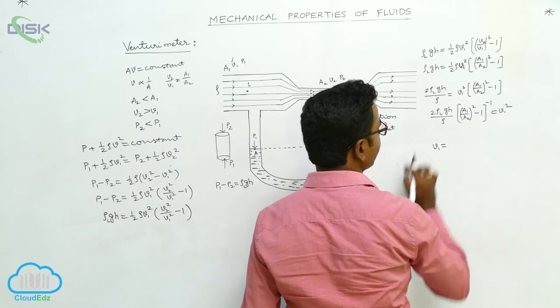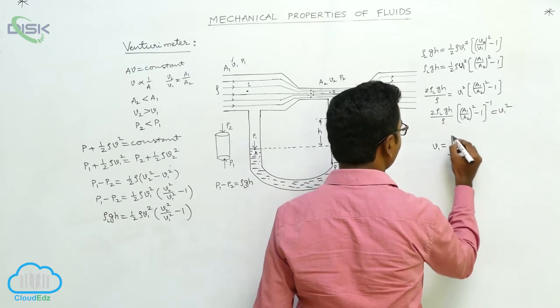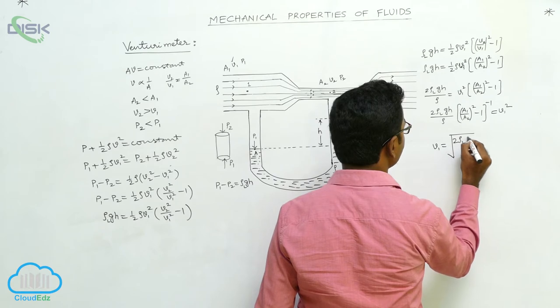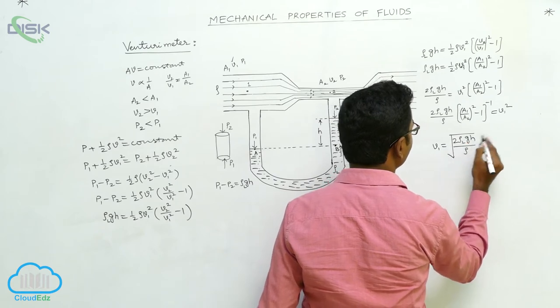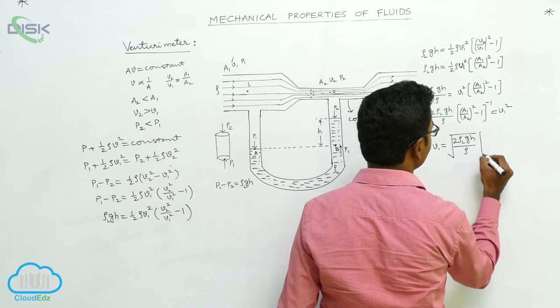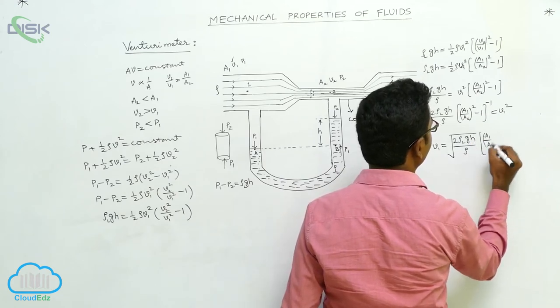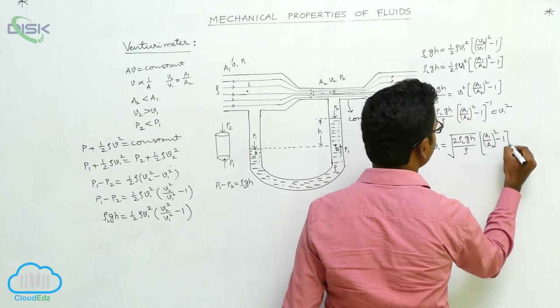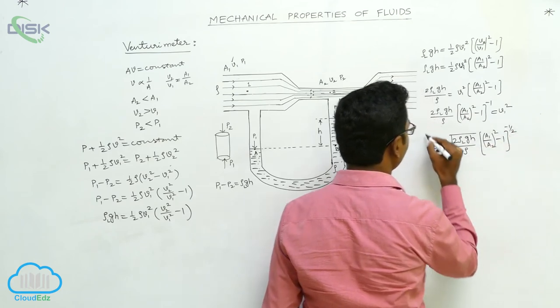V1 is equal by taking square it becomes square root, under root 2 rho LGH by rho, and for this term also square root. Square root means power 1 by 2. So we can write A1 by A2 whole square minus 1 whole power minus 1 by 2.